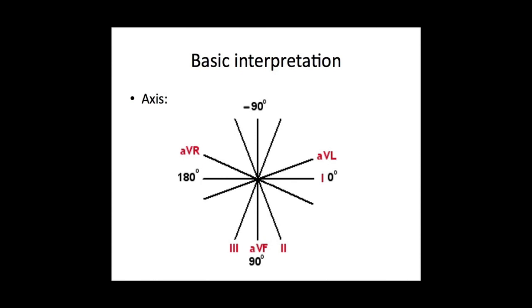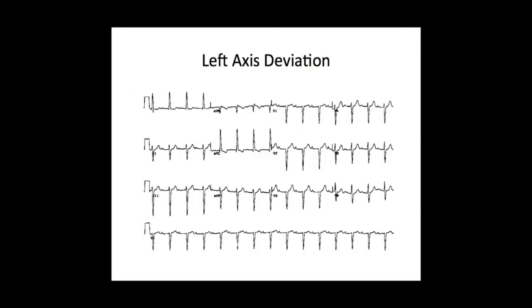To work out whereabouts in these quadrants the axis falls, you need to look at the level of net deflection in leads I and AVF. In this example ECG, the net deflection in lead I is upwards — a positive deflection — whereas for AVF there's a net negative deflection, and the absolute values of the deflection are roughly equal. So the net negative deflection in AVF is roughly equal to the net positive deflection in lead I.